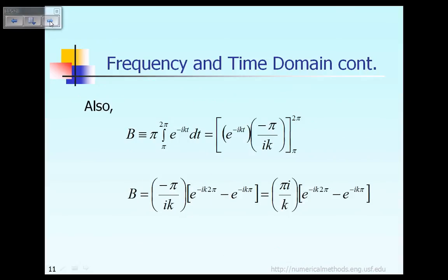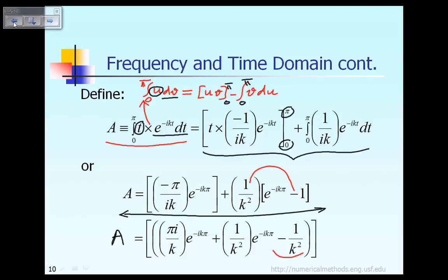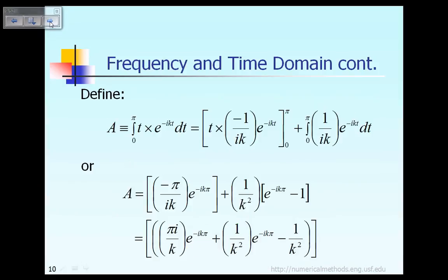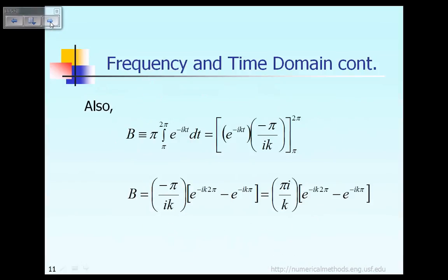Also, the value of B — as defined a few slides ago — is the integral from π to 2π of π times e^{−ikt}. Let's see how to calculate it. This is the definition of B, and the integral on the right-hand side can be easily calculated including the lower and upper limits. After evaluating the limits, the value of B is equal to the last equation shown.